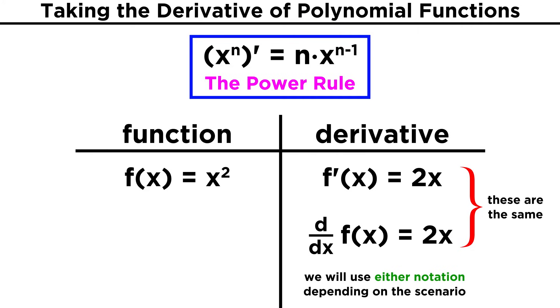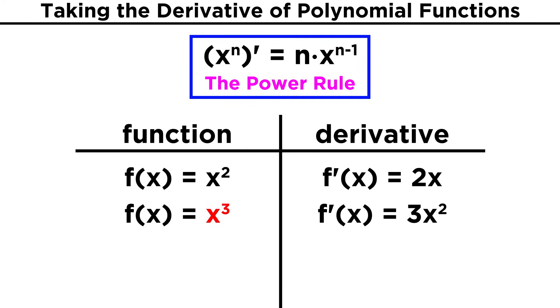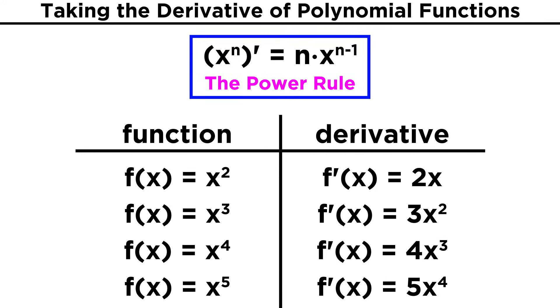With that understood, let's take the derivative of some more polynomials. Again, using the power rule, the derivative of x cubed is three x squared. The derivative of x to the fourth is four x cubed. This pattern will continue for any exponent.